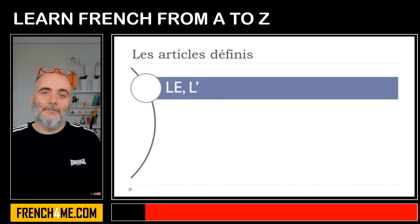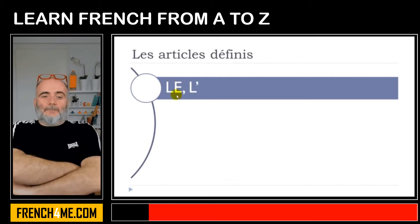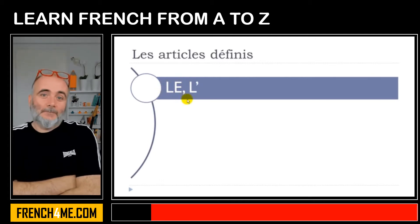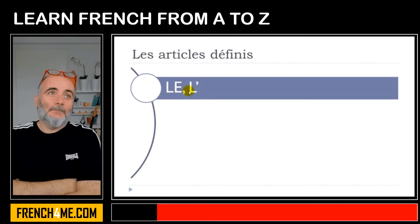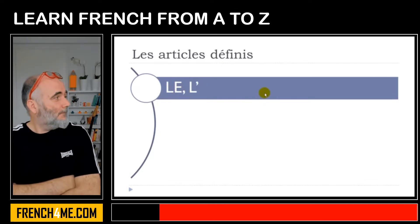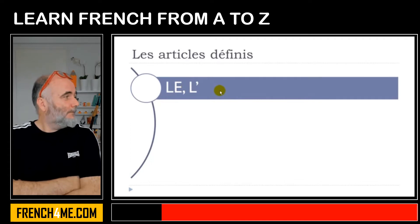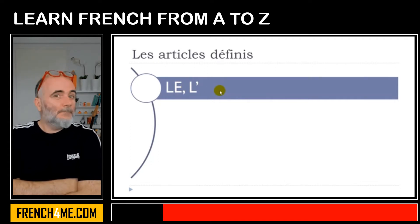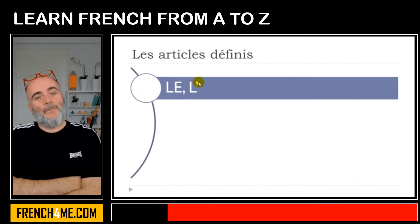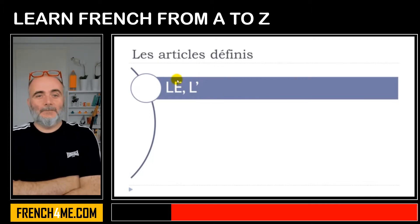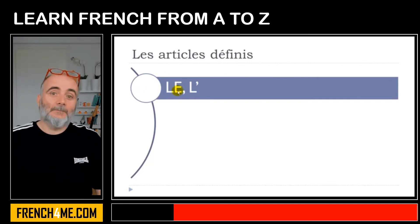We start with the masculine form, so we've got 'le'. And then in some cases this vowel E, if it's close to other vowels — so if there is a word after that starting with a vowel — it will have to disappear, so you will get this L'. But the main form is 'le'.